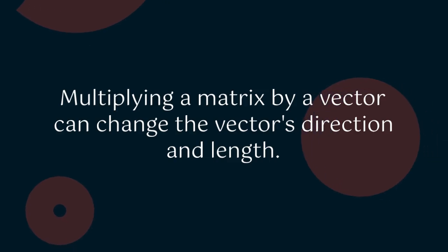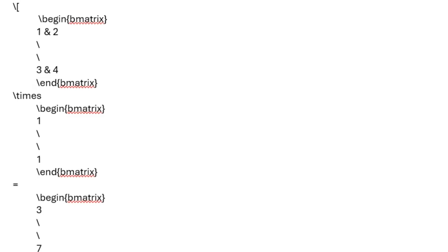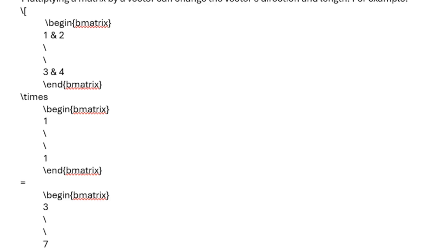2. Multiplication. Multiplying a matrix by a vector can change the vector's direction and length. For example, from this picture we see how the multiplication operation works.